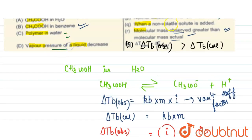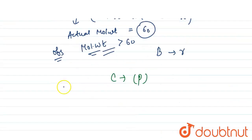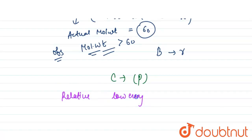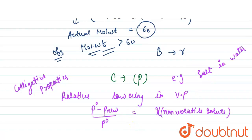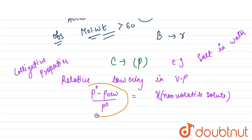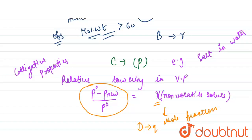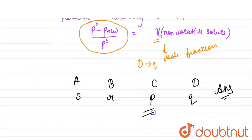Lastly, vapor pressure of liquid decreases when a non-volatile solute is added. This is relative lowering in vapor pressure, which is a colligative property. The relative lowering is equal to the mole fraction of the non-volatile solute. Vapor pressure always decreases when we add a non-volatile solute like salt in water. These are our final answers for the match the following.